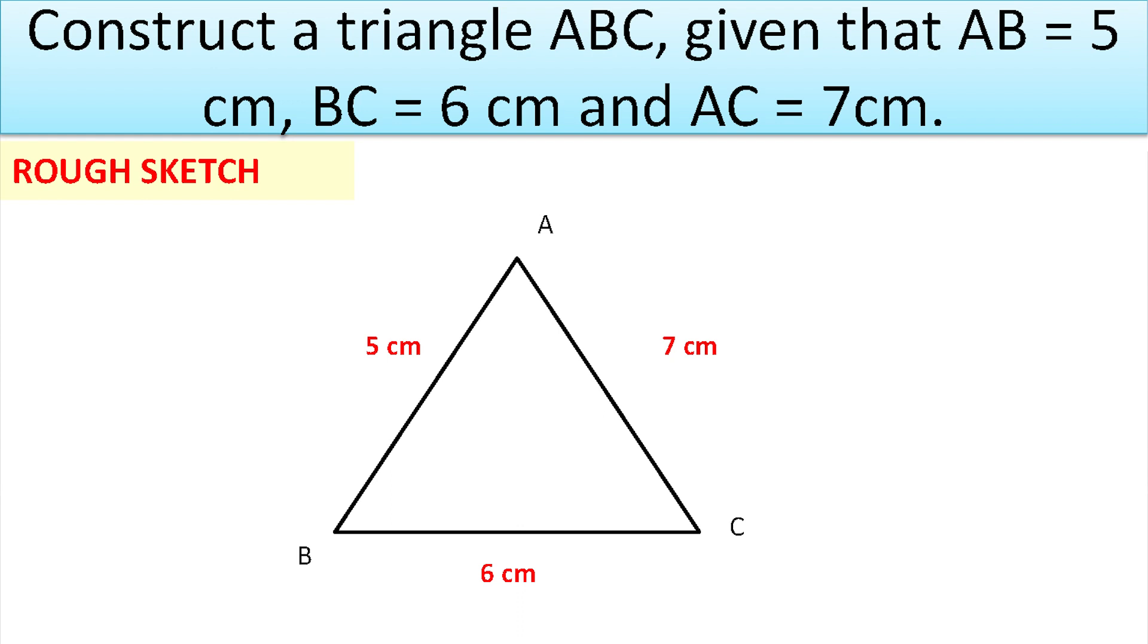So, this is a triangle here, and you can label it starting with any vertex. Here I have BC is equal to 6 cm, AB is equal to 5 cm, and AC is equal to 7 cm.